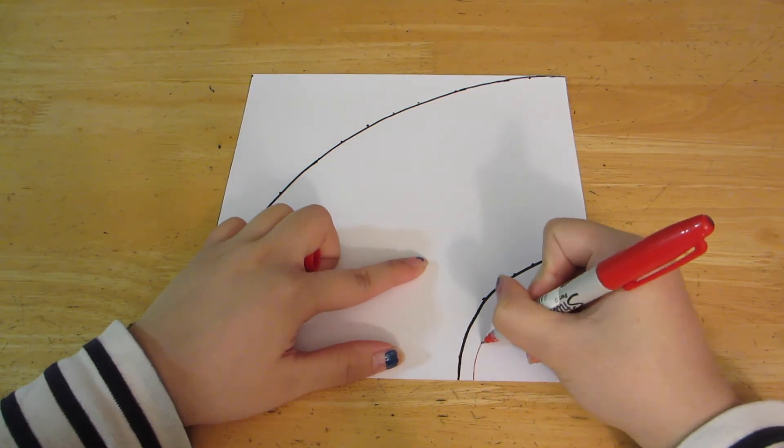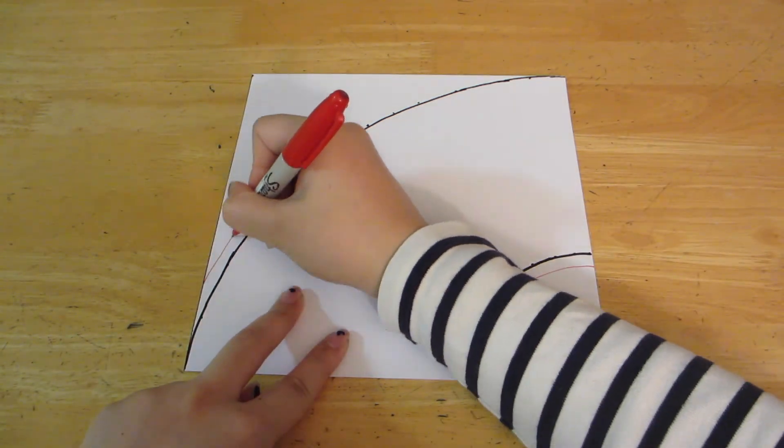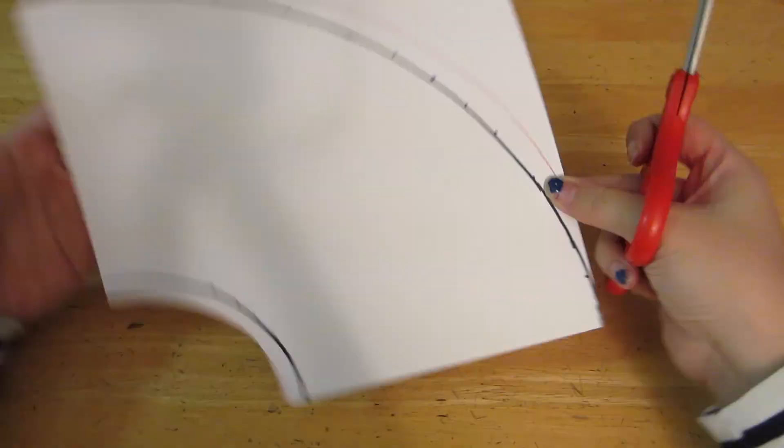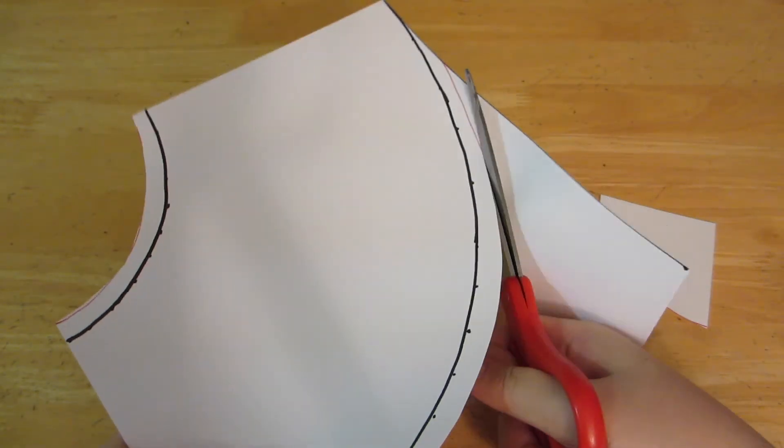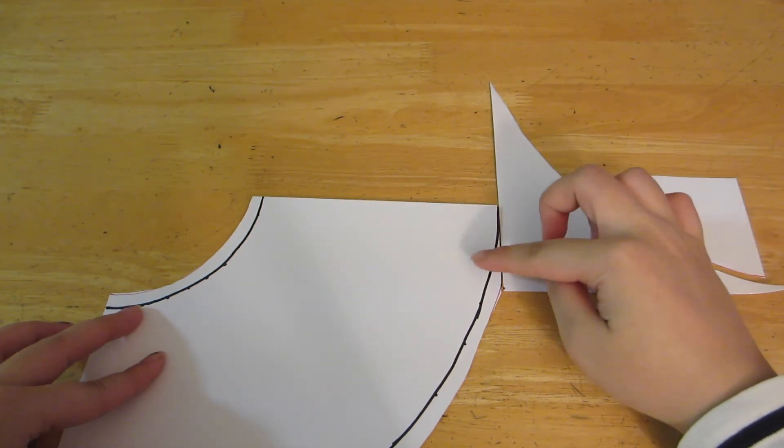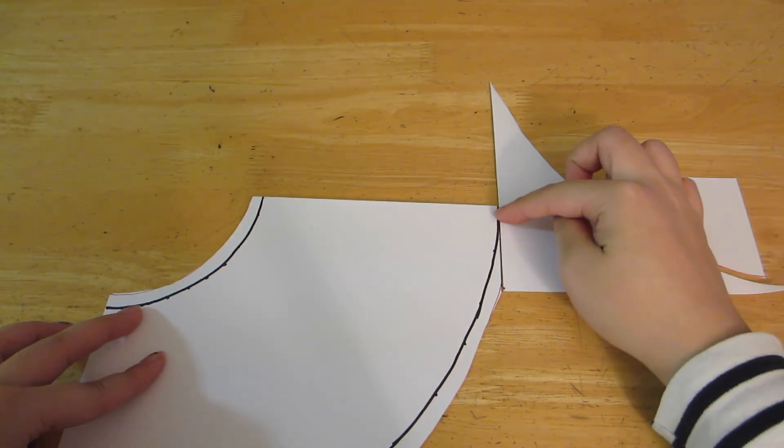Next, mark your seam allowances and then you can cut your pattern out. And if your paper is too short, you can take the scrap pieces of paper and then just tape it and extend your seam allowance and then just cut it right off.